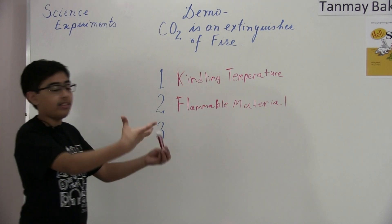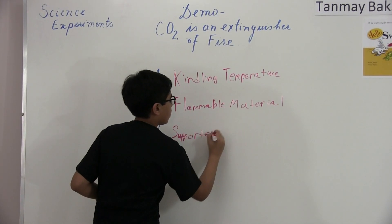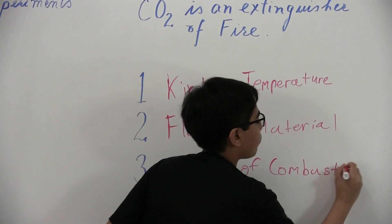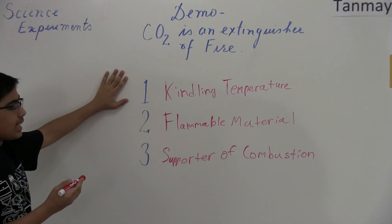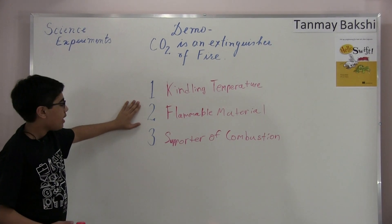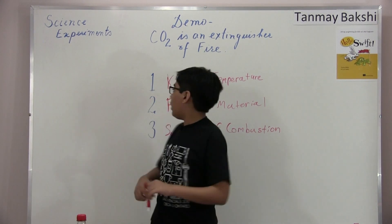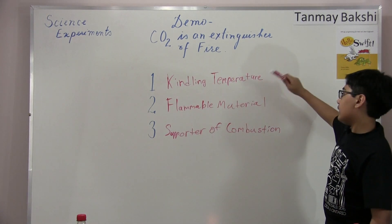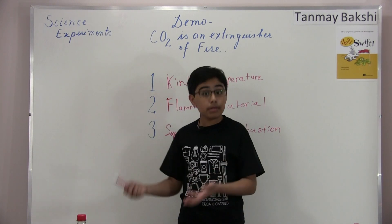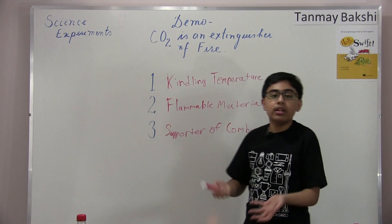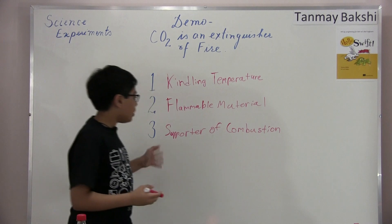The third thing you need is a supporter of combustion. Kindling temperature is the temperature at which substances start to burn; a flammable material is any material that can catch fire; and a supporter of combustion is usually oxygen. If you combine oxygen, wood, and a really high temperature, it would create a fire. However, there are things that are not supportive of combustion, such as carbon dioxide — these are inhibitors of combustion. They do not allow flames to exist; they put them out. Supporters of combustion allow flames to exist.